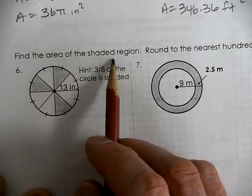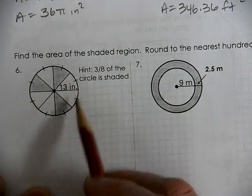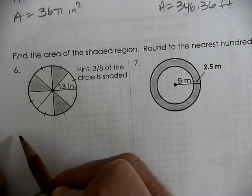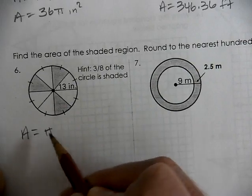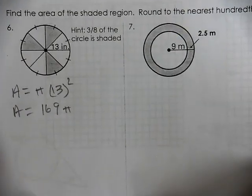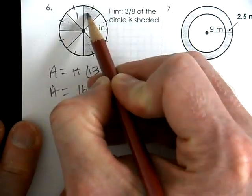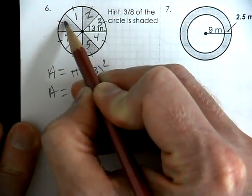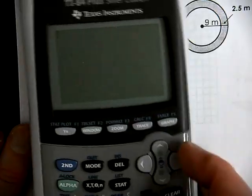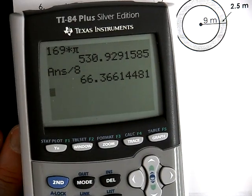Here we have the area of a shaded region. This is a full circle with a diameter of 13 — we want to find the area of three shaded slices out of eight total sections. Starting with the total area: πr² = 169π, which is the exact answer for the total area. Dividing into 8 equal pieces: 169π ÷ 8 = 66.37 per piece.